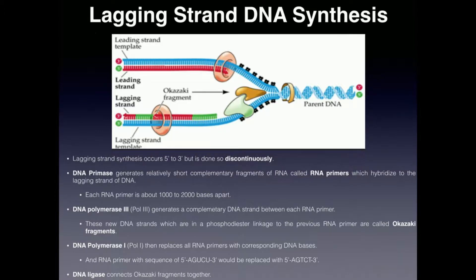You can see in this picture here we have what's called a leading strand, and down here is the lagging strand. The leading strand synthesis, which is up on the top, we're not going to cover in this video. It's very straightforward, very easy to understand — you can even kind of see it in this picture. The DNA polymerase, which happens to be DNA polymerase 1, just goes right along the DNA strand and synthesizes 5' to 3'. Very straightforward.